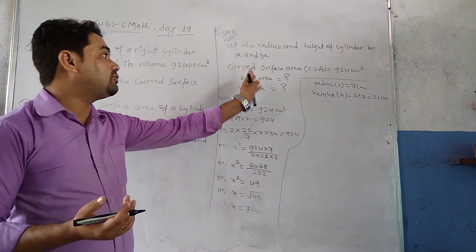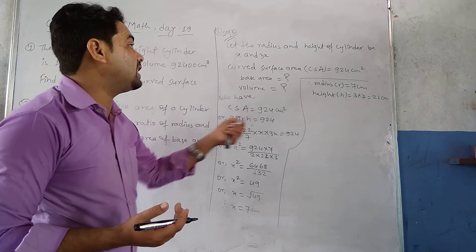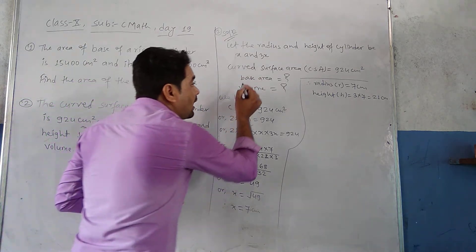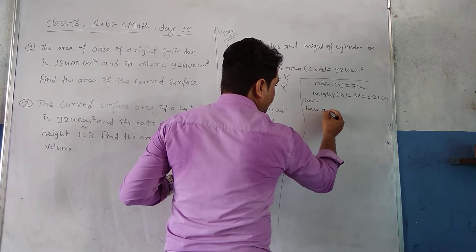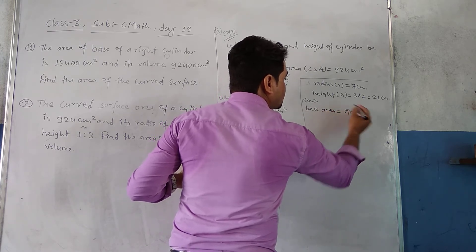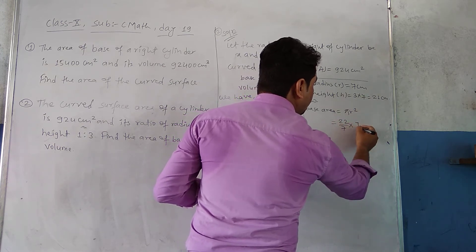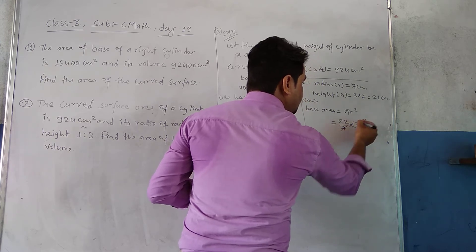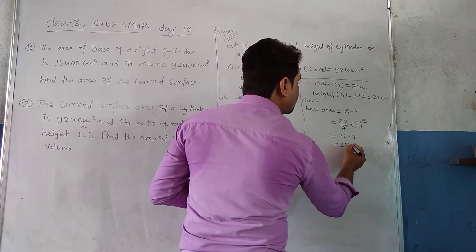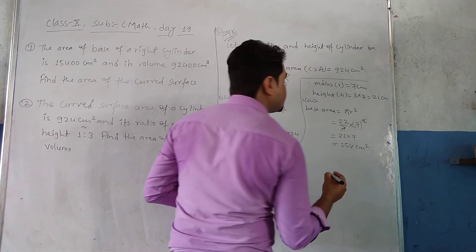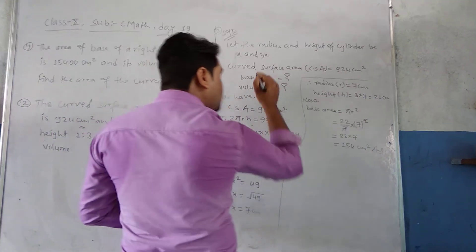Now that we have radius and height, we can find all required quantities. First, base area: base area = πr² = 22/7 × 7² = 22/7 × 49 = 22 × 7 = 154 cm². Since it is area, the unit is centimeters squared.